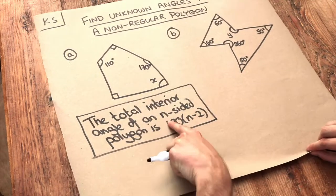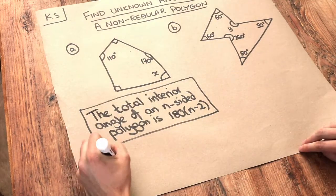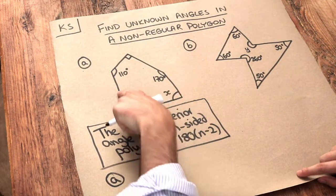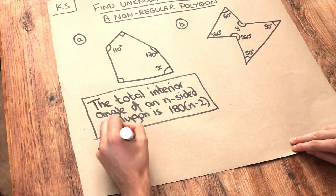Now let's apply this formula to shape A. Now how many sides does this shape have? Well 1, 2, 3, 4, 5, it's a pentagon, so n is equal to 5.